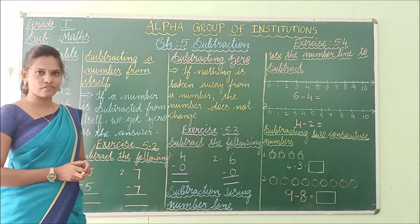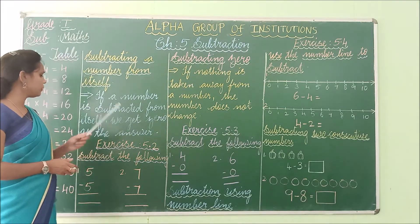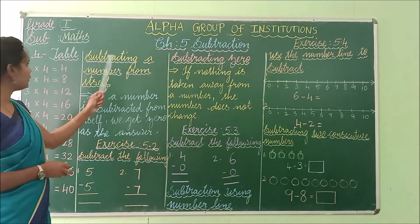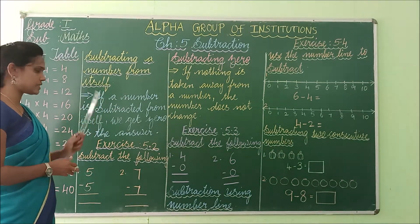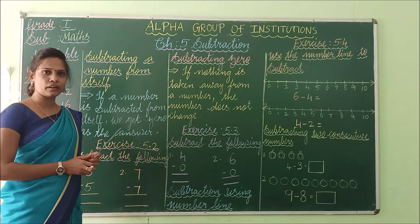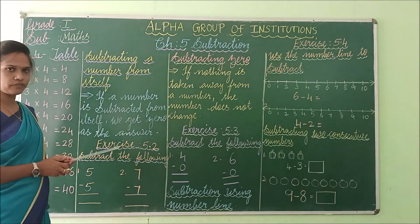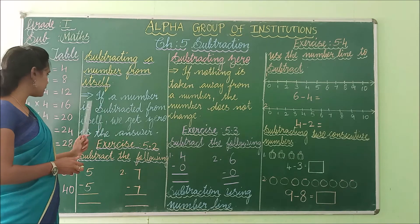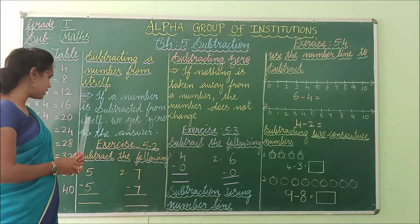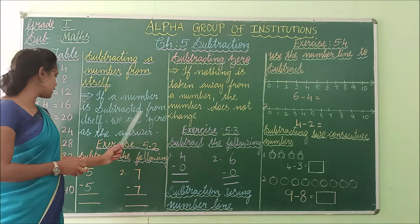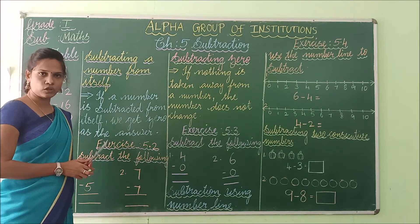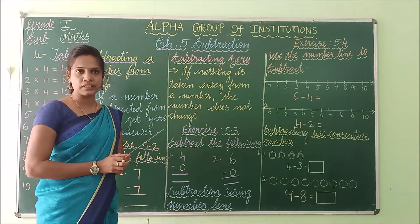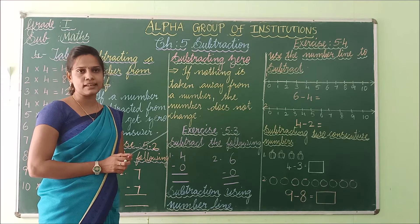In the last class, we have seen 2 exercises. Now we are going to see the next one — subtracting a number from itself. If a number is subtracted from itself, we get 0 as the answer. If you subtract 2 same numbers, we will get 0 as the answer.